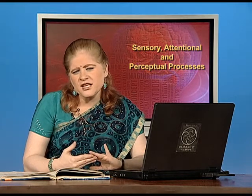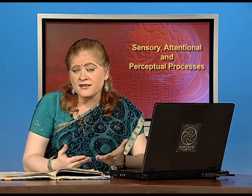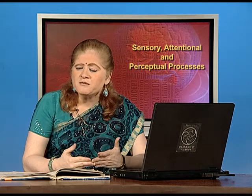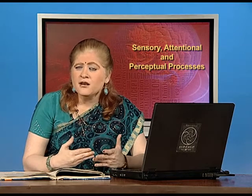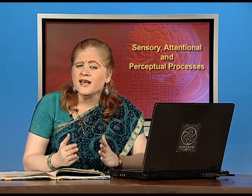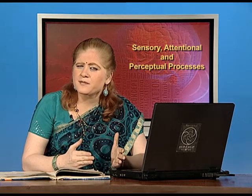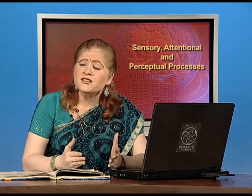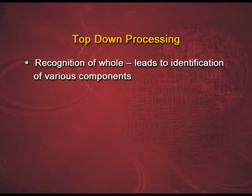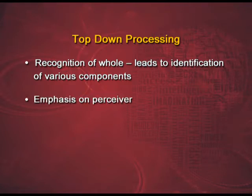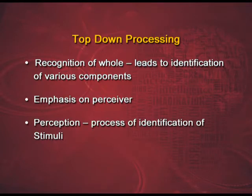There is also another approach. For instance, when you see a dog, do you first perceive its paws, forelegs, and eyes and then make sense of a dog? Or do you just say it is a dog and then go on to see its different parts? If you first see the dog and then the parts, you are using the top-down processing approach. This deals with the recognition of the whole which leads to identification of certain components, with the emphasis on the perceiver.